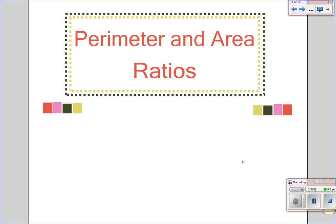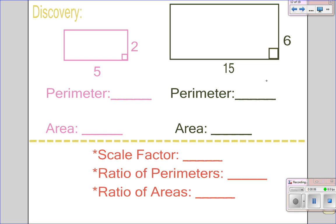In this video, we'll be looking at perimeter and area ratios. Now, if you recall, a ratio is a fraction of one side of something over the other side of something, and that's all we need for a ratio.